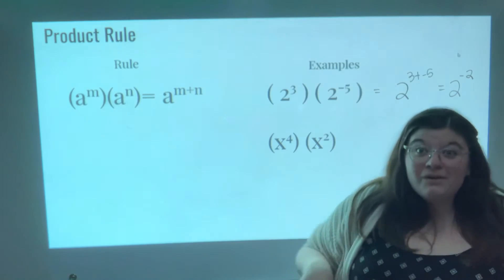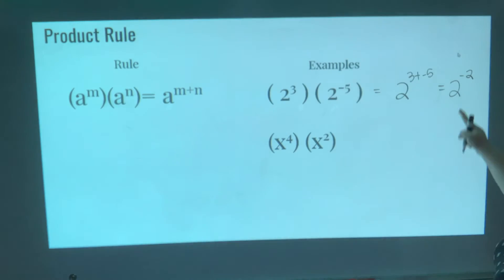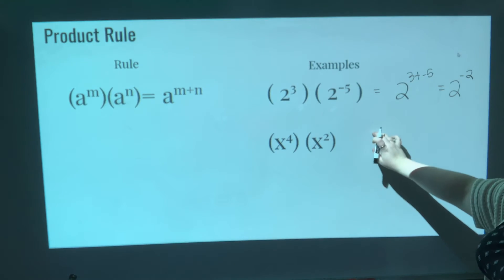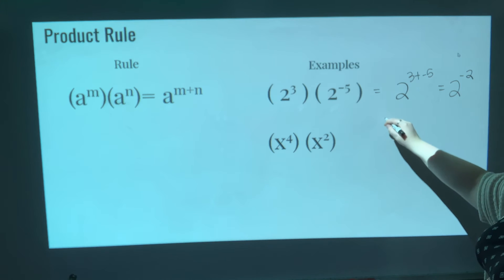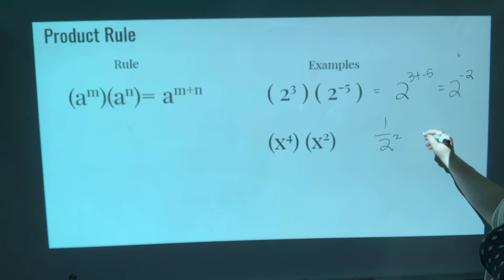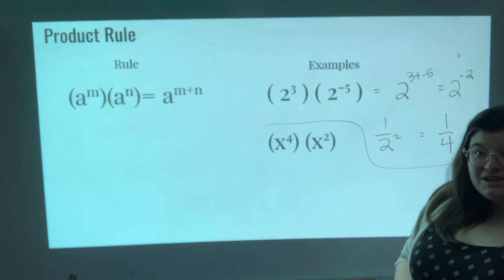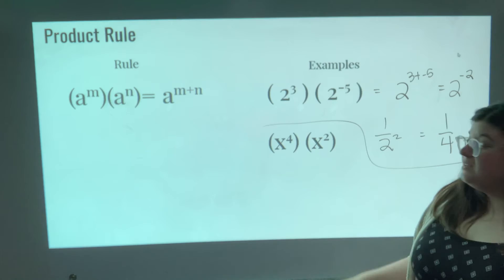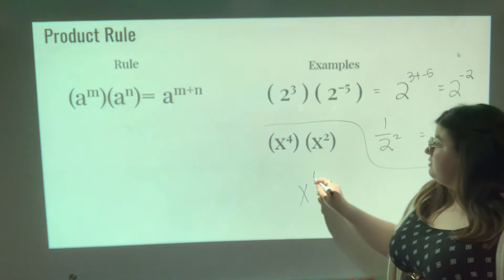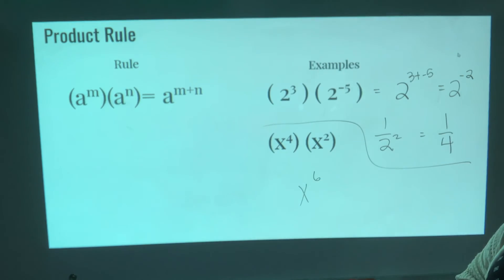it's a negative exponent. Throw it in the denominator. That is the same—I'm running out of room, so I'm going to jump down here—it's the same thing as 1 over 2 squared, which is 1 over 4, one fourth. Next one down here: X to the 4th power times X squared—same bases, just add your exponents. X to the 6th power. Pause if you need to.